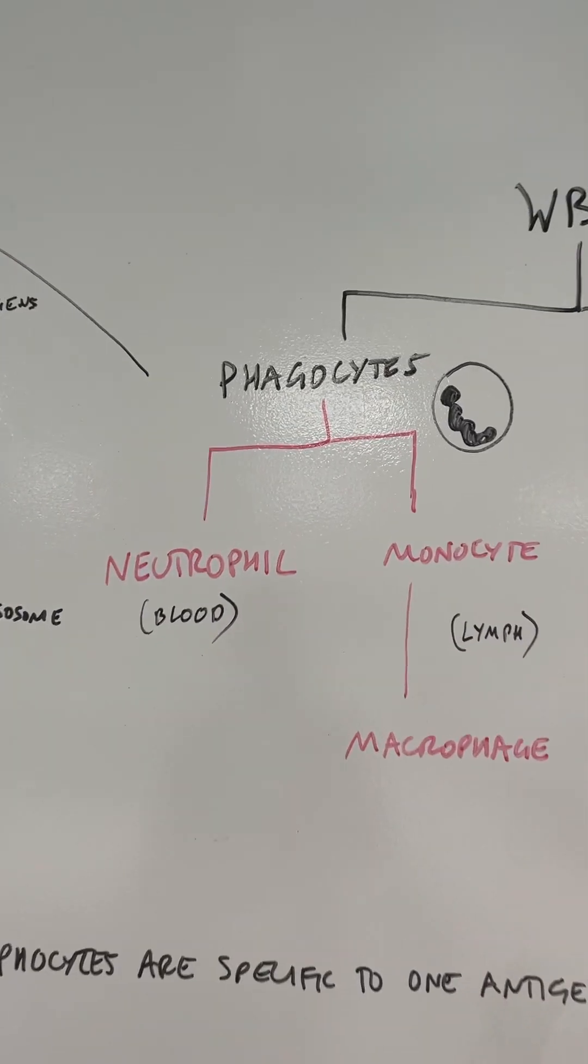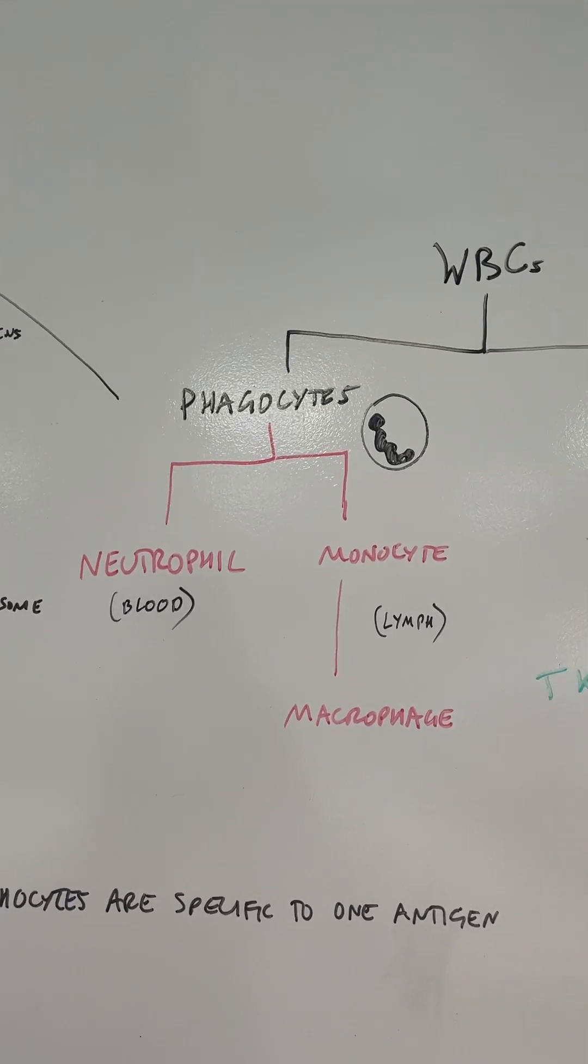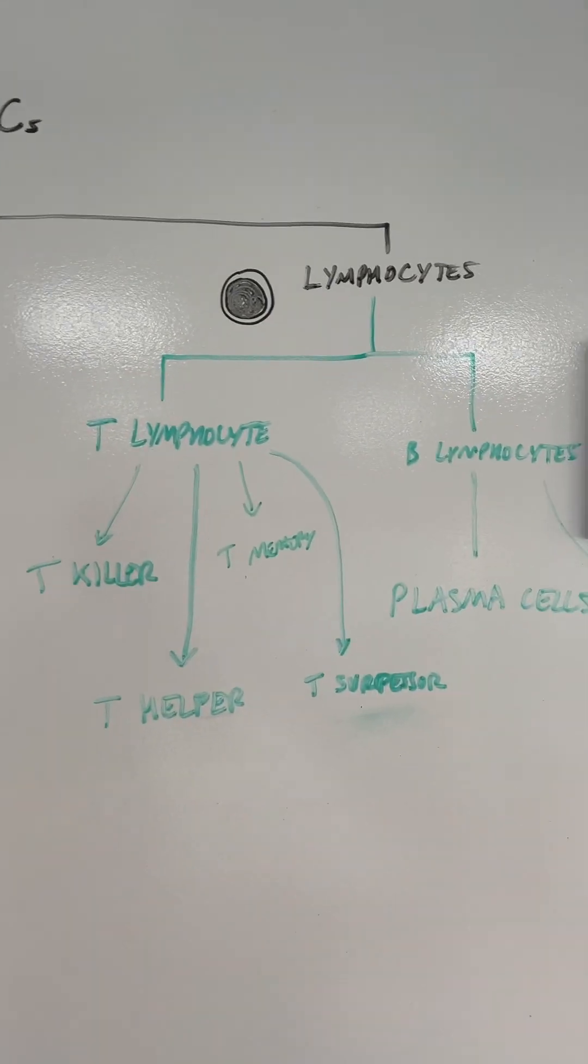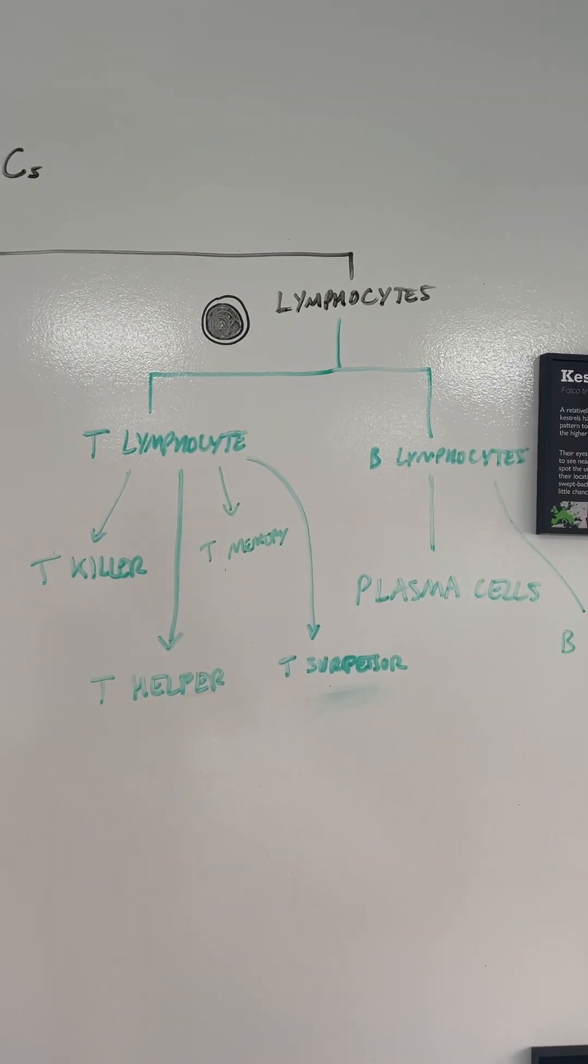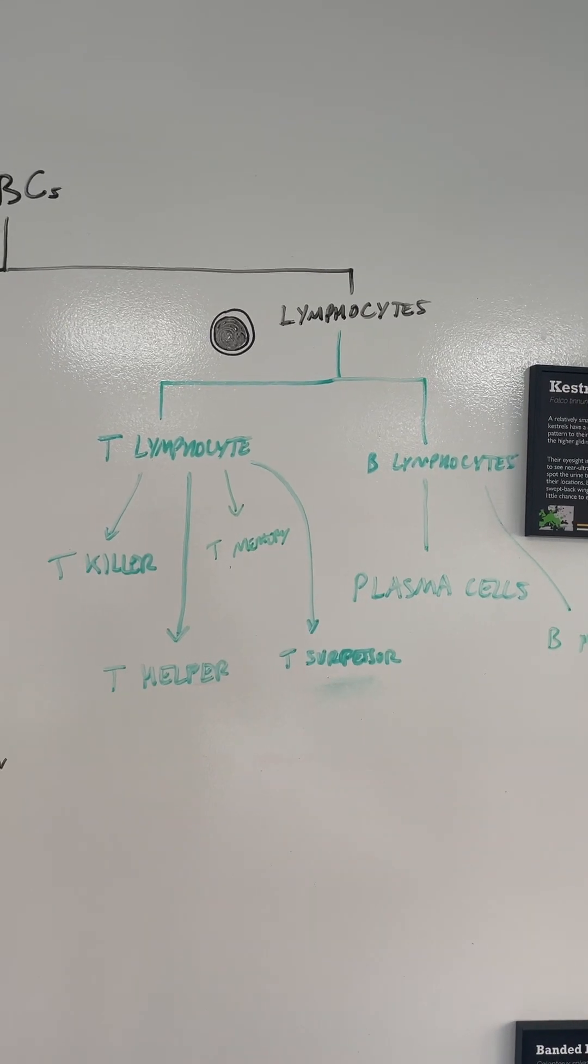You've got phagocytes - neutrophils which go around in the blood and monocytes and macrophages in the lymph system. Over here we've got the lymphocytes. You've got two different types: T-lymphocytes and B-lymphocytes, and you've got different versions of each of those.